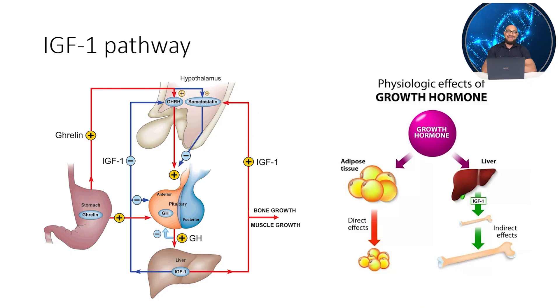There is one more physiological pathway through which growth hormone realizes its effects — it's called the indirect mechanism of action. In the indirect pathway, growth hormone activates the so-called Janus kinase signal transducer and activator of transcription — the JAK2/STAT signaling pathway in short.